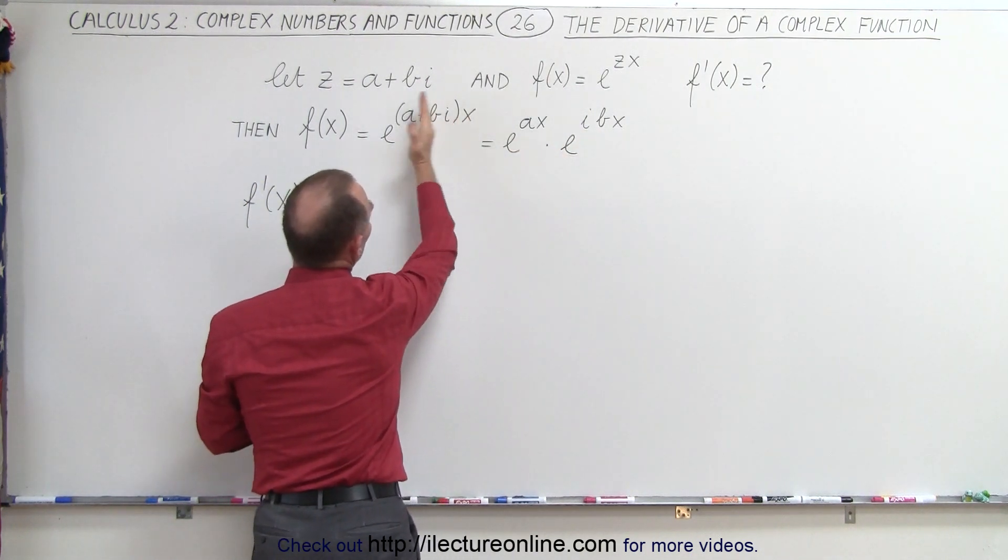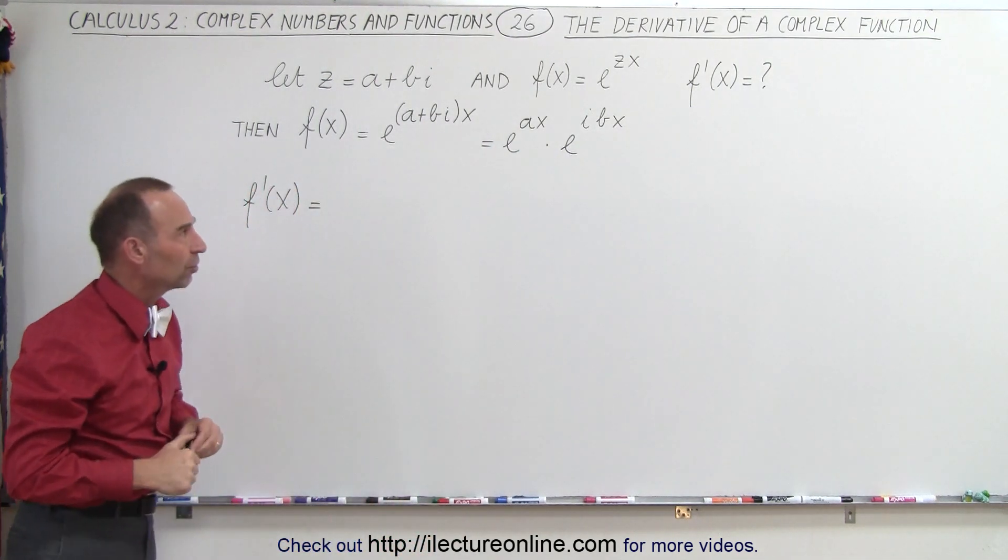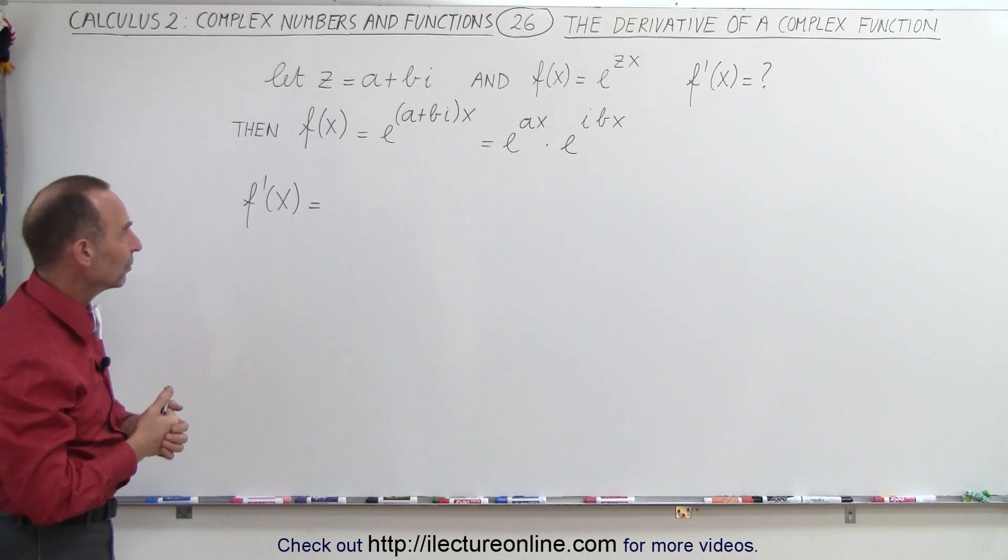So we're separating this into two separate terms and then writing as a product of two exponential functions, where only the second one has the i in it. So that's a complex exponential function there.